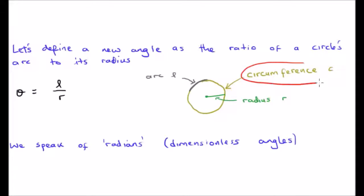C to describe the full circle's length, the circumference. And R the radius to describe, well, of course, the radius. Now that we have defined a dimensionless angle, namely that theta is L the arc length over the radius, we speak of radians, so theta is now measured in radians rather than in degrees.